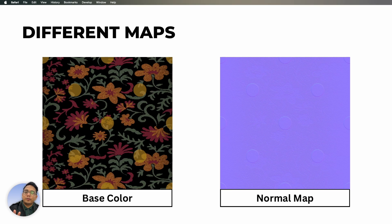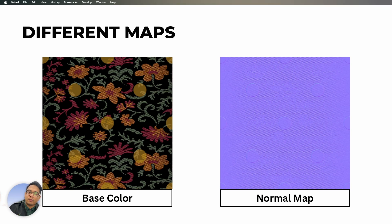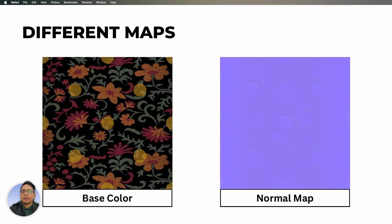The second topic in texturing is about communicating fabric properties in the 3D space through different maps. Don't be overwhelmed — you can always come back and focus on specific topics. The first map is base color, which is a color map. If you take an image from Photoshop and put it as a print, that is your base map — all color information is communicated through it. The second is the normal map, which communicates weave structure — for example, the diagonal pattern of a twill weave.